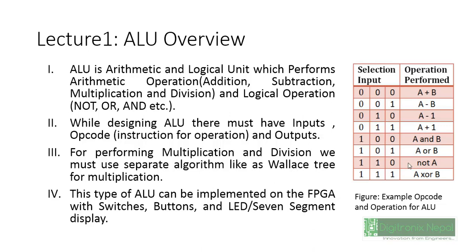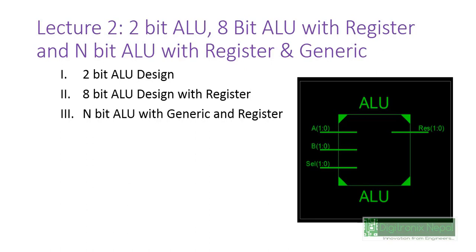The operation table shows different input states and their selected operations. When the input is 00, it selects A plus B; when 01, it selects A minus B. Regarding multiplication and division, we need to utilize different types of algorithms. This type of ALU can be implemented on FPGA using slide switches, buttons, and LEDs predefined on the FPGA board. We can also use a seven-segment display or a liquid crystal display for showing results.